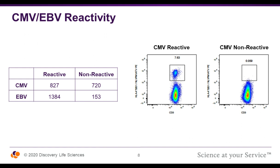Additionally, donors are classified for reactivity against CMV and EBV by ELISA. Consistent with other reports, about half of our donor population is reactive to CMV while the majority are reactive to EBV. This data becomes very useful combined with HLA data because we can now classify donors and look for antigen-specific T cells. Using dextramers against a specific peptide from CMV, we can identify CD8 T cells from HLA-A02-positive donors previously classified as CMV reactive or non-reactive by serology, allowing us to further hone in on donors suitable for downstream assays.